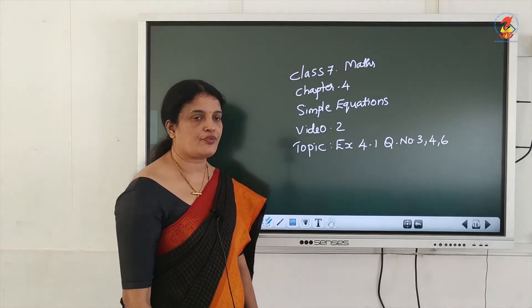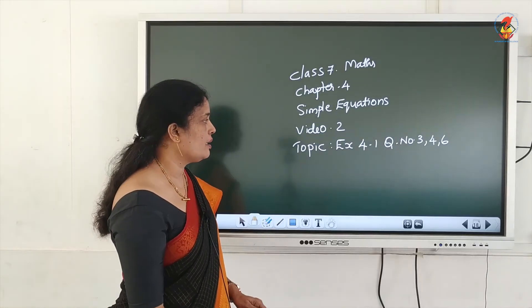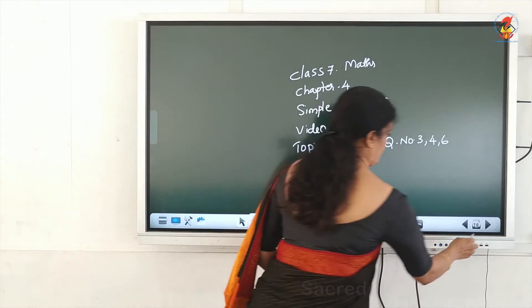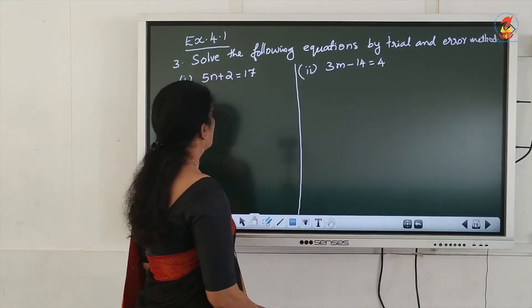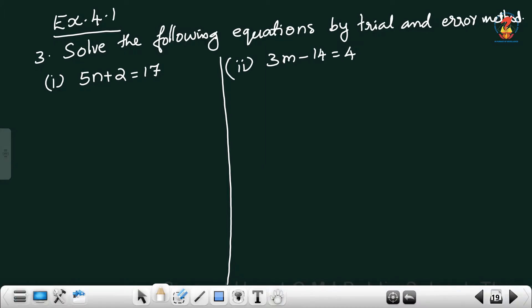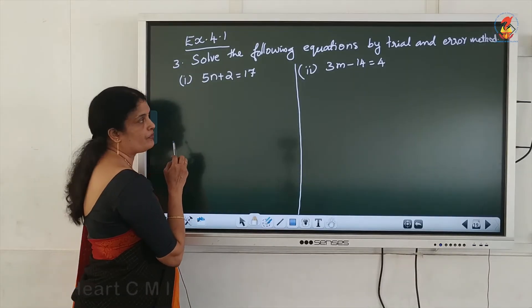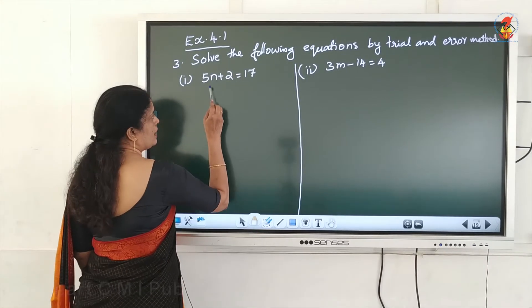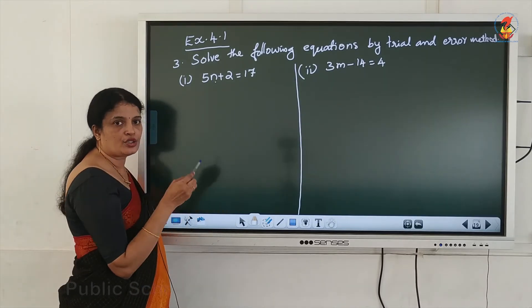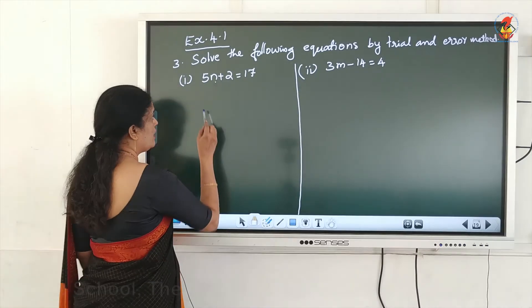Next topic: Exercise 4.1, Question number 3. Solve the following equations by trial and error method. The meaning of trial and error method is that you substitute values in place of the variable — 1, 2, 3, etc.